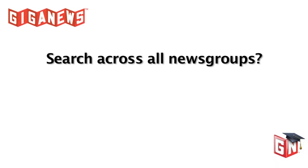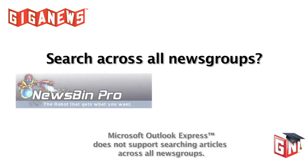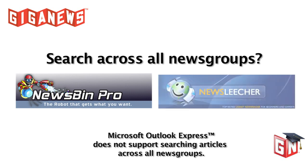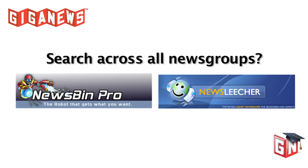Some newsreader clients include a feature that allows you to search for articles in all newsgroups, which is extremely useful if you don't know exactly which newsgroup has the articles that you want. Newsreader clients which include this feature include Newsbin Pro and Newsleacher. Both may require a monthly subscription fee for search functionality, so check their respective websites for details.